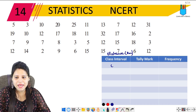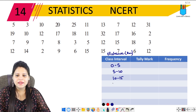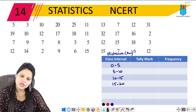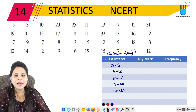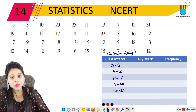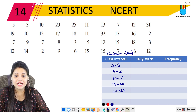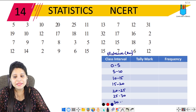Let's see what we have to do. The class intervals are: 0 to 5, then 5 to 10, then 10 to 15, then 15 to 20, then 20 to 25. The maximum value is 32, so we need to go up to 25 to 30, and then 30 to 35, because 32 will fall in that interval.